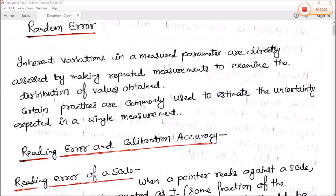Now, in this video, we are going to learn about the different types of errors. That is, random error. So what is random error? Inherent variation in a measured parameter are directly assessed by making repeated measurements to examine the distribution of values obtained. In other words, certain practices are commonly used to estimate the uncertainty expected in a single measurement.